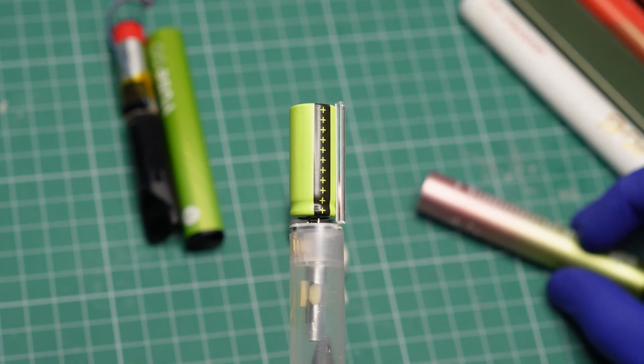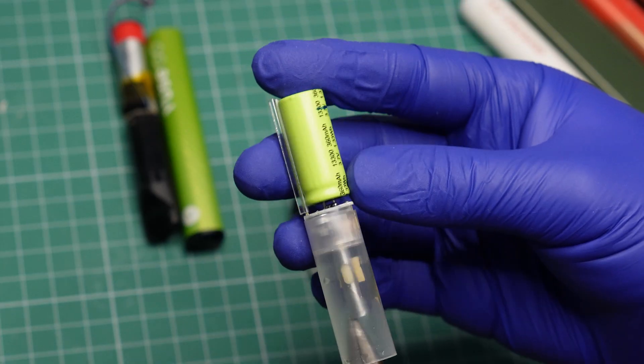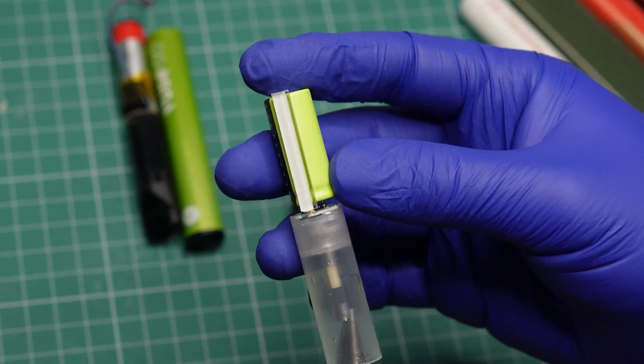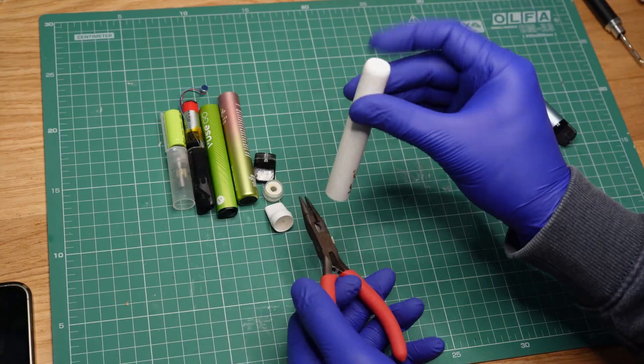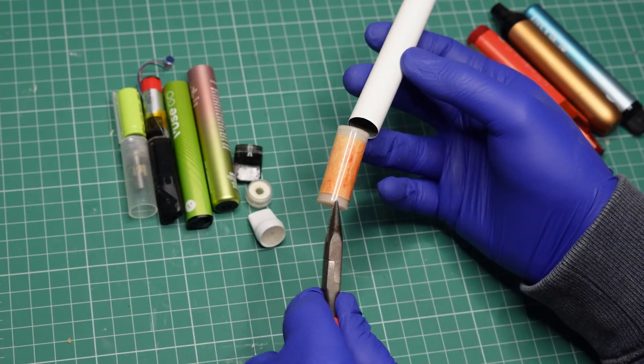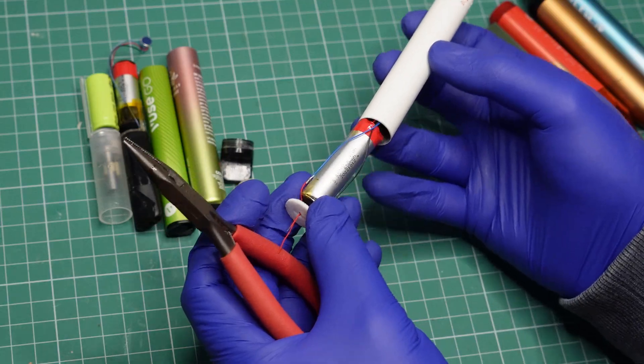It looks a lot like an electrolytic capacitor, but it is actually a lithium-ion battery in a capacitor package. This white one is similar in construction and comes apart the same way. Inside it there is a slightly bigger battery.